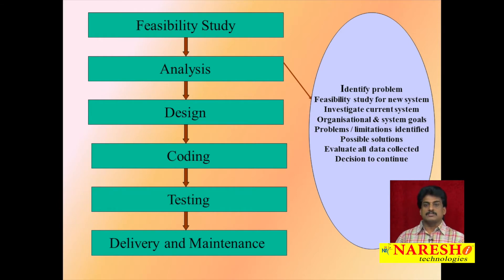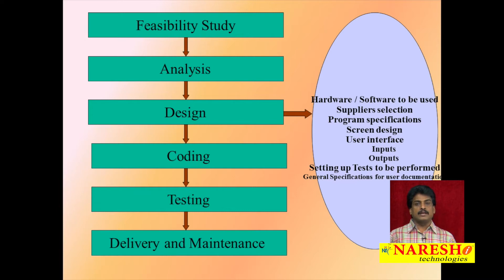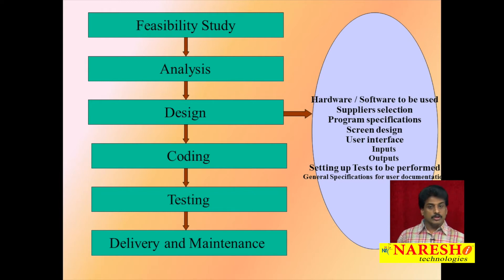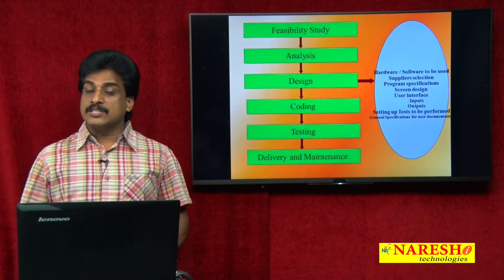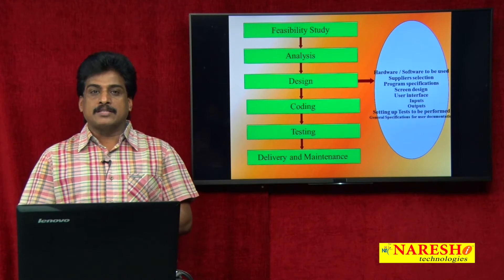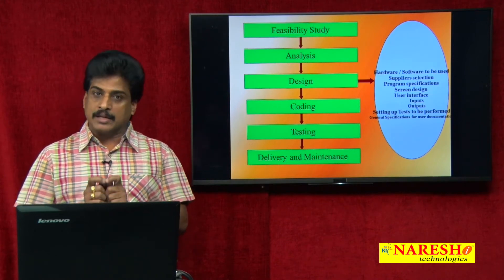The next phase is designing, which is completely done based on the analysis phase — specifically the SRS document. Designing is done in two ways: high-level designing and low-level designing. High-level designing means dividing a project into main modules, done by project manager-level people. Sub-modules and child modules constitute low-level designing, done by project leader-level people. The output of this phase is a document called TDD — technical design document — which contains the total design process of the project.